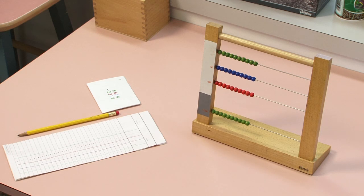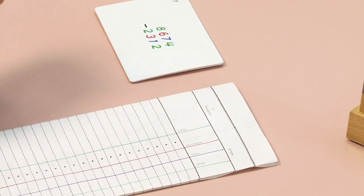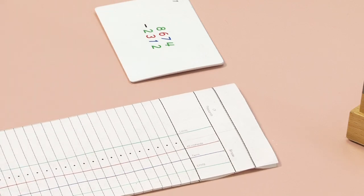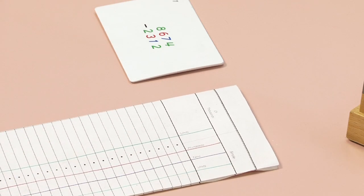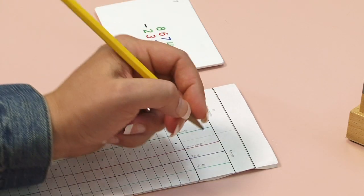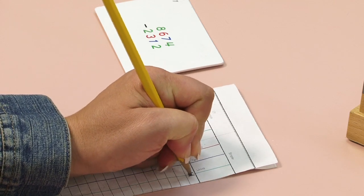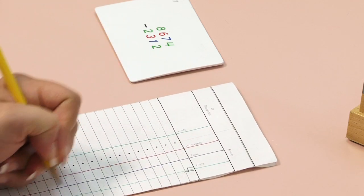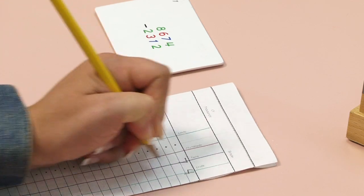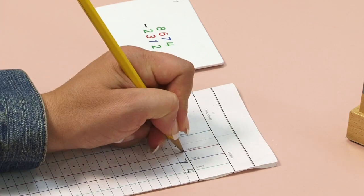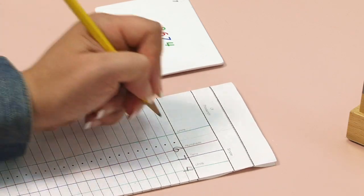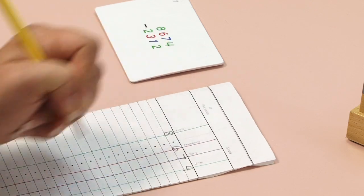First I'm going to write the problem onto my paper. Today the problem that I have is on a problem card so I'm going to transfer and copy it onto mine. I have four units, seven tens, six hundreds, and eight thousands.